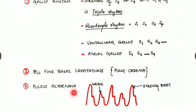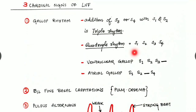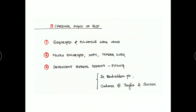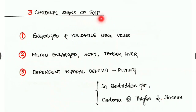Pulsus alternans is a type of pulse where there are alternating strong beats and weak beats, and this is typical of left ventricular failure. The three cardinal signs of right ventricular failure are engorged and pulsating neck veins — raised JVP.